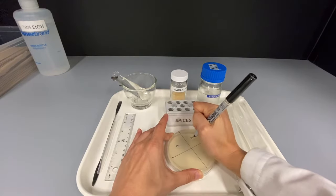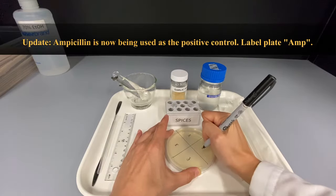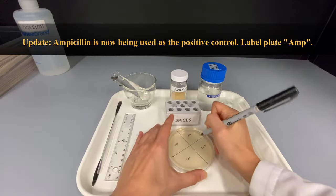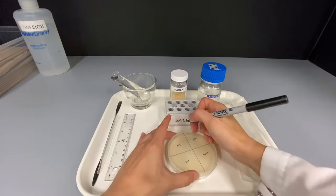For this experiment, you will have NEG for negative control, in this case sterile water, STR for streptomycin, your positive control, GAR1 for garlic concentration 1, and GAR2 for garlic concentration 2.